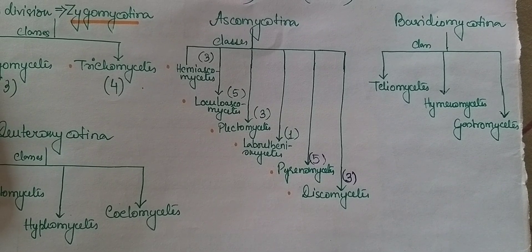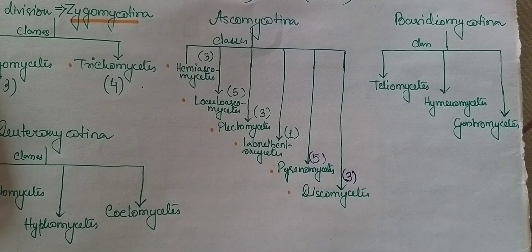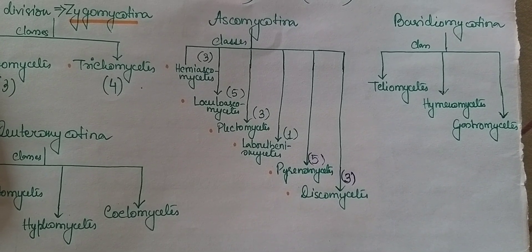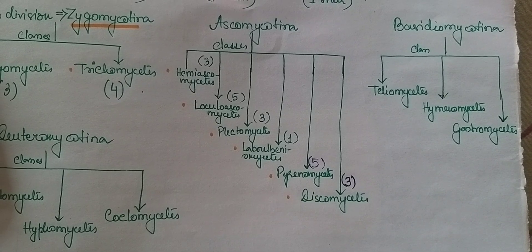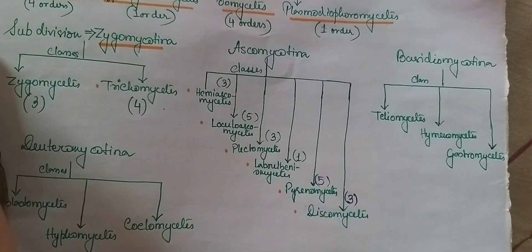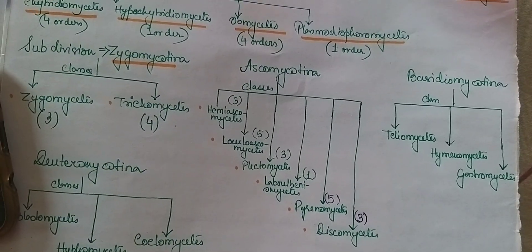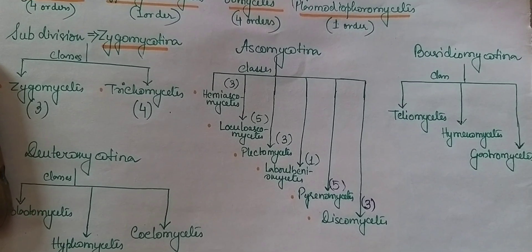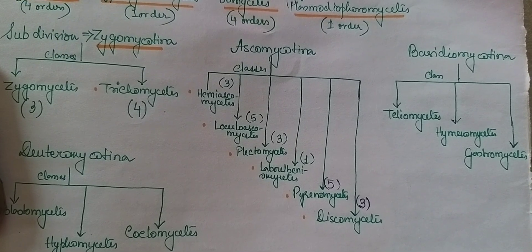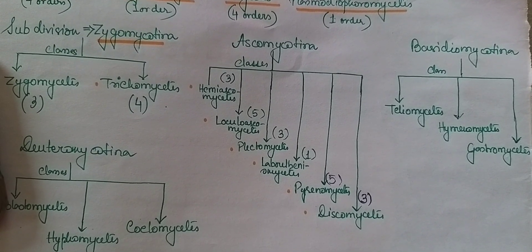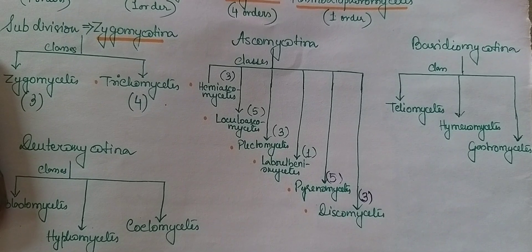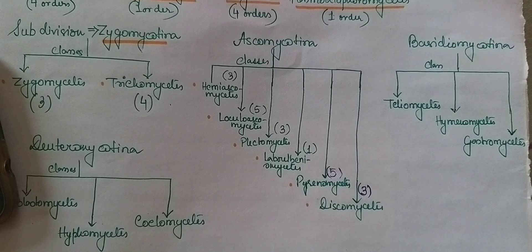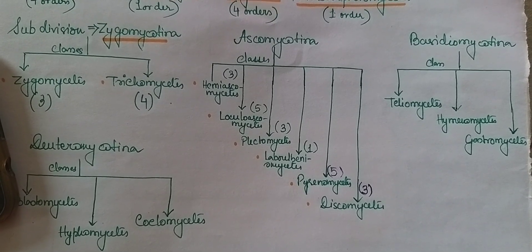Under Basidiomycotina, Teliomycetes has six orders, among which one very famous order is Agaricales. Additionally, Teliomycetes has two orders: Uredinales and Ustilaginales. Finally, Gasteromycetes has got nine orders.